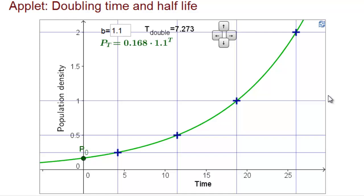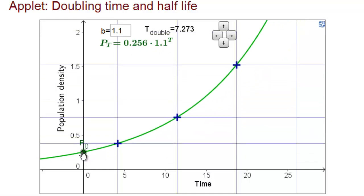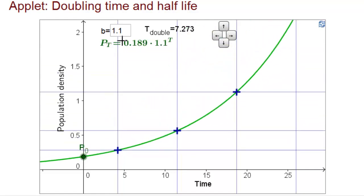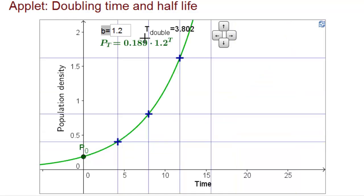The doubling time and half-life applet allows you to explore how the doubling time works. The green curve is an exponential function that you can view as the solution to a linear dynamical system with parameter b and initial condition p0. The exponential function is p0 times b to the power of t. And you can change p0 by dragging it up and down, and we can change b by typing in new values.